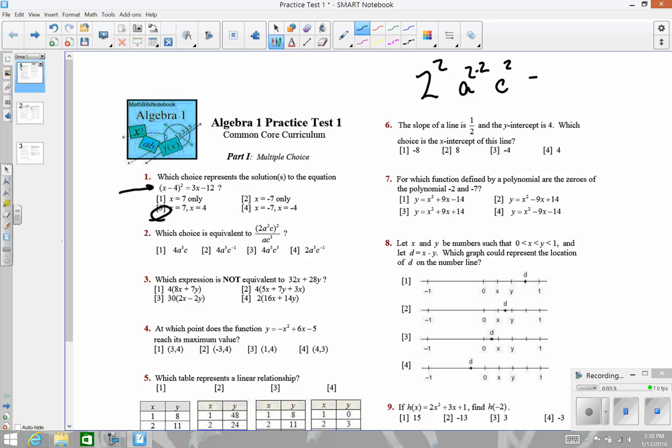This is just the numerator. It gives me 4a to the 4th c squared. And don't forget we have a denominator, ac to the third. If I have the same base in numerator and denominator, like these a's, I take the numerator exponent 4, subtract the denominator exponent, that would be a 1 even though we don't show it. 4 minus 1 makes that a 3.